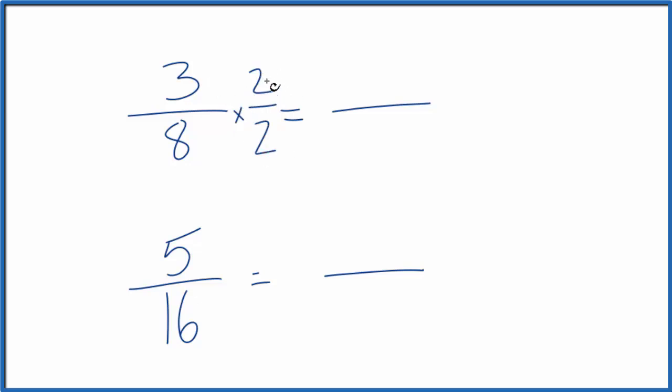When we do that, this is just 1. 2 over 2 is the same as 1, so we haven't really changed anything, just the way it's written.